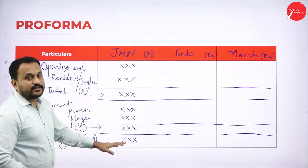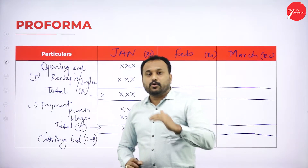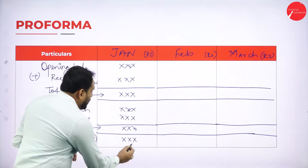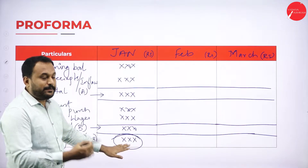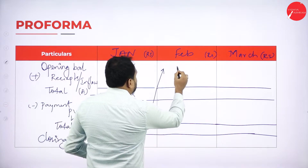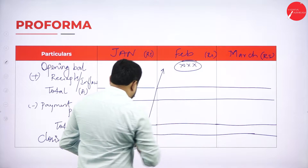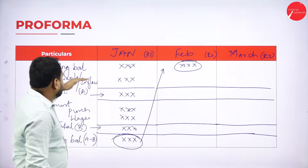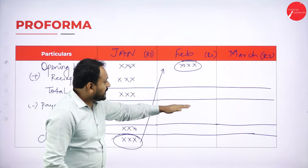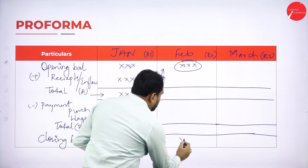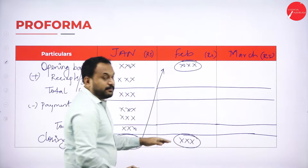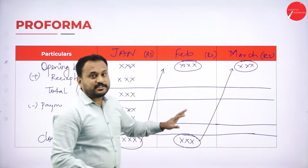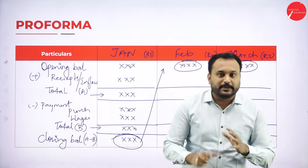Now understand the trick here, students: the closing balance of January will become the opening balance of February. Whatever is the closing balance of January will be the opening balance of February. In the month of February, we again list all receipts and all payments, calculate the closing balance, and the closing balance of February will become the opening balance of March. This continues — this is the pro forma of cash budget.